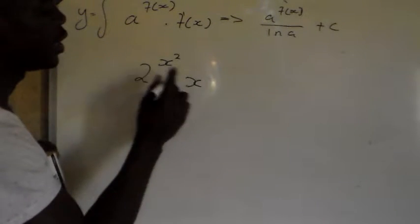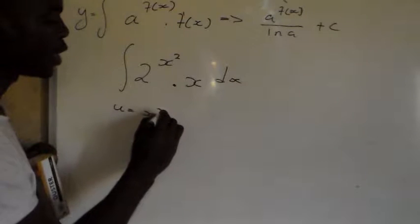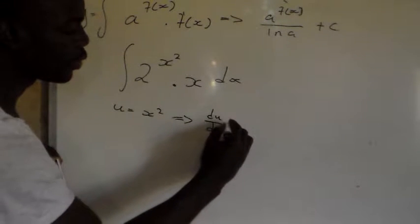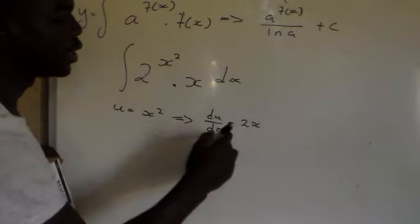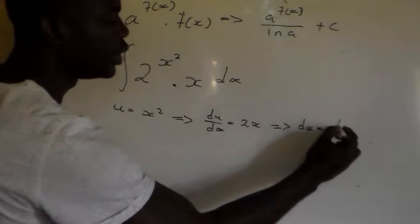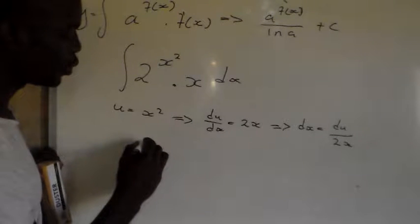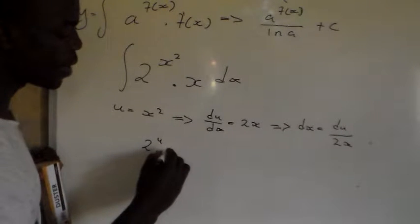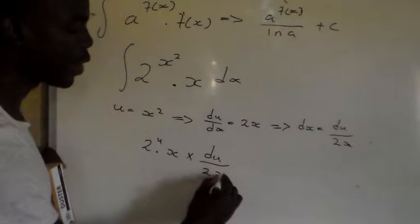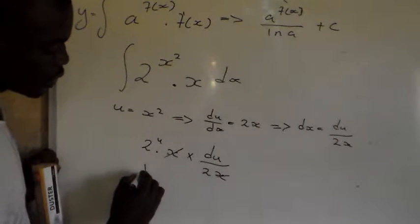Let's integrate that number. I'm going to let u equal to x squared. Then the derivative du over dx is going to be 2x. I'll make dx the subject of the formula, so dx equals du over 2x. Substituting back, we're going to have 2 to the power u multiplied by x, and dx is du over 2x. The x's cancel, and we remain with 1 over 2.